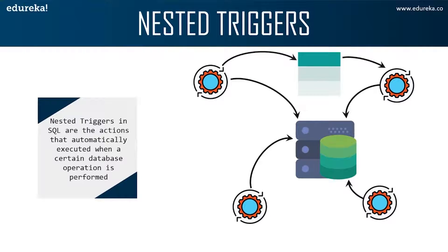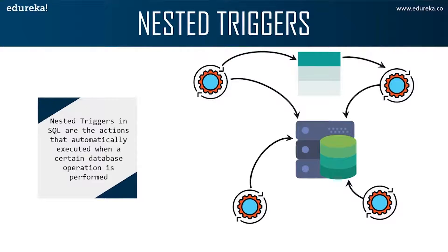You might be wondering in which scenario we can use a nested trigger. Continuing from the earlier scenario — Anna sent an email for every new customer added to the company's database. Now, what if she wishes to keep track of the number of customers to whom the email was sent? Anna needs to create a nested trigger to keep track of the count along with sending an email.